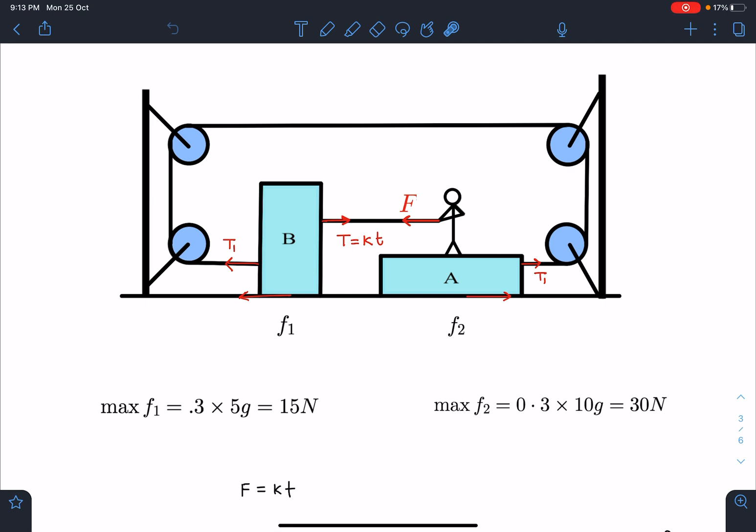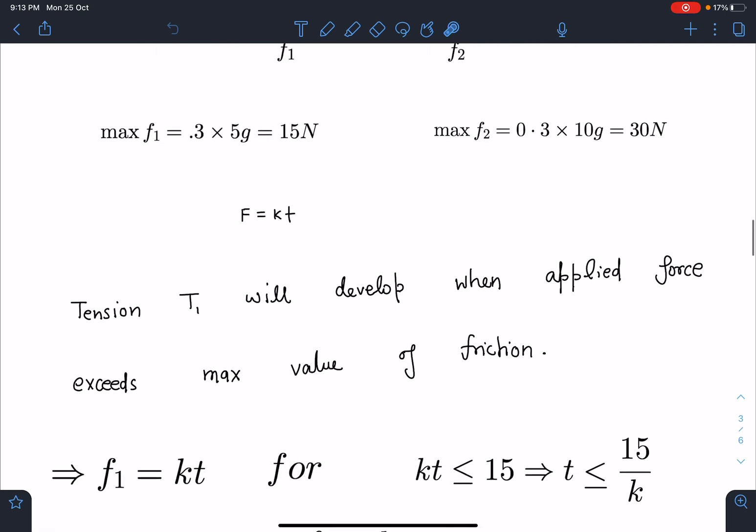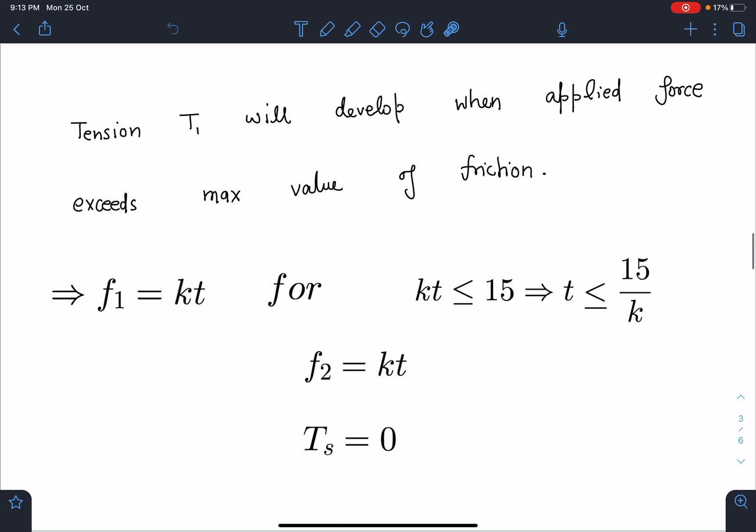So 0 to 15 seconds, we can say because this maximum value is 15 and this is kt. So 15/k time, this block will be at rest and friction F1 is going to be kt. Tension T1 will develop when the applied force exceeds max value of friction.